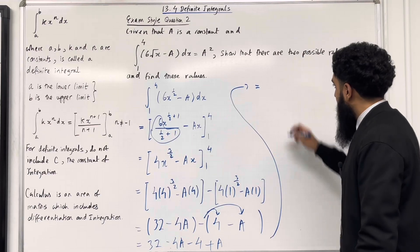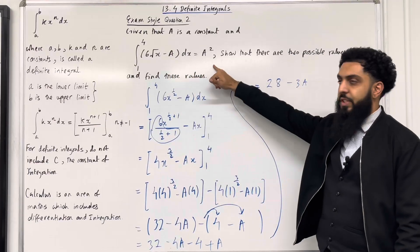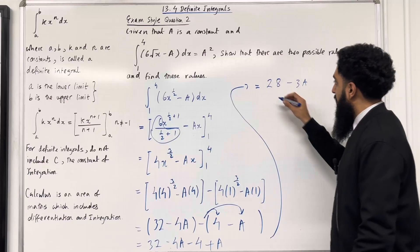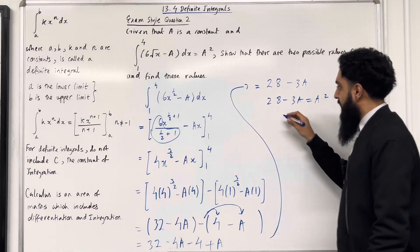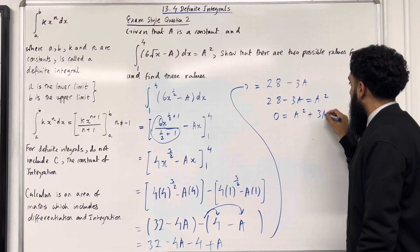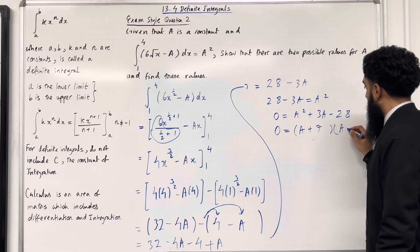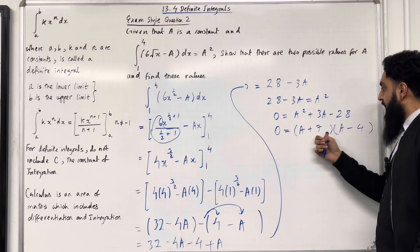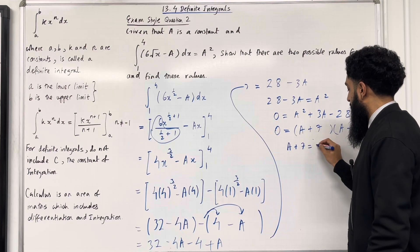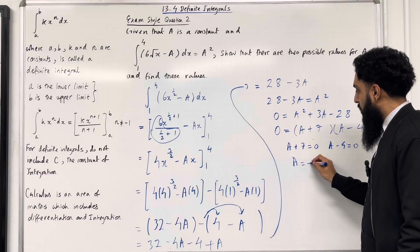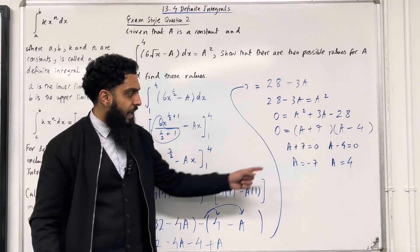Simplifying, we get 28 minus 3a. That is precisely the left-hand side, which must equal the right-hand side, a squared. So we have 28 minus 3a equals a squared. We have generated a quadratic equation. Taking everything to the right-hand side gives 0 equals a squared plus 3a minus 28. Factorizing the quadratic: we get (a + 7)(a - 4). 7 times minus 4 is minus 28, and 7 minus 4 is precisely 3. Setting each bracket equal to 0 leads to a equals minus 7 and a equals 4. This proves that there are two possible values for a: minus 7 and 4.